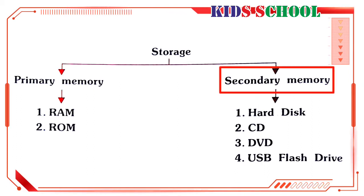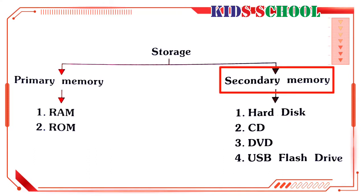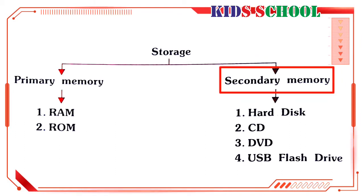Data stored in RAM is in the form of electrical pulses and will remain stored only as long as electric power is supplied. You may lose all data if there is an interruption in power supply or if you accidentally switch off the computer. Some data or information is very important and so it needs to be stored on a permanent basis. Such information is stored in the secondary memory of a computer.